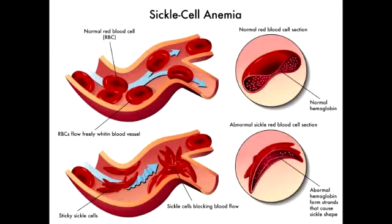Describe when the newborn starts seeing the effects of sickle cell anemia. Newborns initially do not show signs of sickle cell anemia because they have a high concentration of hemoglobin F. But when they start switching over at the age of 6 months to hemoglobin S, they will then start showing signs of sickle cell anemia.